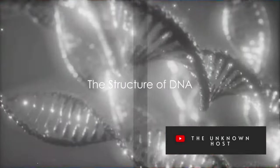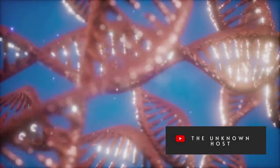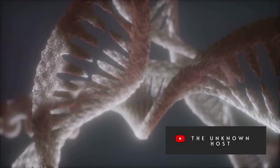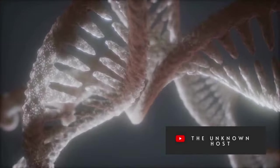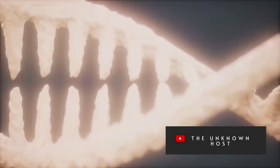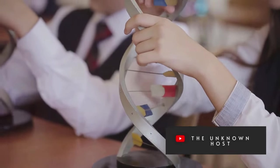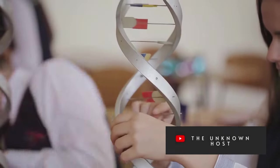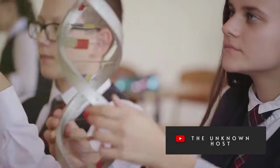Imagine a twisted ladder or a spiral staircase—that's what DNA looks like. DNA, or deoxyribonucleic acid, is arranged in a double helix structure resembling a twisted ladder. This intricate structure was discovered in the early 50s by scientists James Watson and Francis Crick. So what makes up this twisted ladder? It's built from repeating units called nucleotides. Each nucleotide consists of three parts: a sugar molecule, a phosphate group, and a nitrogenous base. The sugar and phosphate form the backbone of the DNA, or the sides of our ladder, while the nitrogenous bases form the rungs.